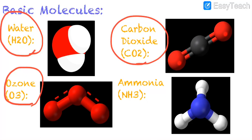Next, we have ozone, or O3. All three atoms in this diagram illustrate the oxygen. And lastly, we have ammonia, or NH3. The white atoms illustrate the hydrogen, and the blue atom illustrates the nitrogen.